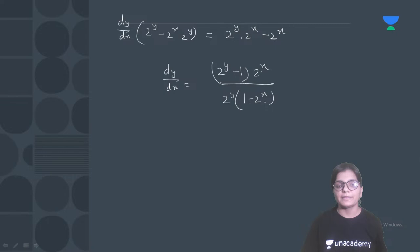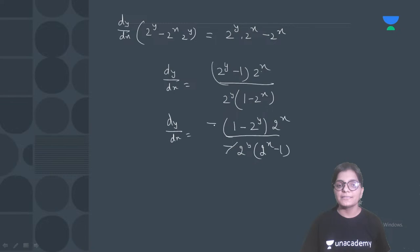So dy/dx will be: if I take minus common, we get (1 - 2^y) · 2^x in the numerator, and 2^y · (2^x - 1) in the denominator. Taking minus common from the denominator as well — minus and minus cancel — so the final answer is dy/dx = (1 - 2^y) · 2^x / [2^y · (2^x - 1)]. So this is option number A, which is correct.